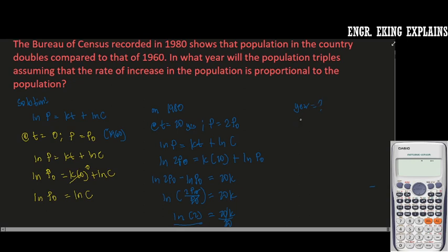when the population triples from the original, so that will be 3P0. So we're going to solve for T, because the year here will just be added to 1960.